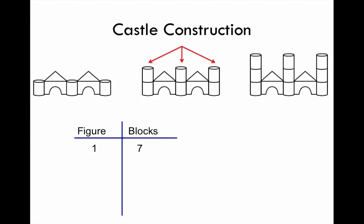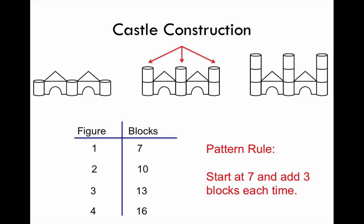Figure 1 starts with 7 blocks. Figure 2 required 10 blocks. Figure 3 required 13 blocks. Figure 4 required 16 blocks. The pattern rule you were to put in a sentence should resemble this: start at 7 and add 3 blocks each time. Make corrections if you need to, then continue.